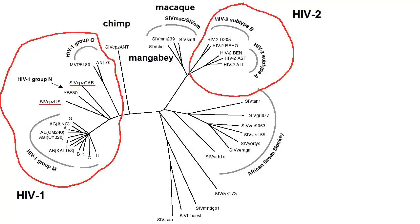The closest relative, according to sequence variations, for the HIV-1 strain was the SIV that infects chimpanzees. The closest relative of HIV-2, a viral species largely found in Africa, appears to be the SIV found in Sudi-Mangebese.